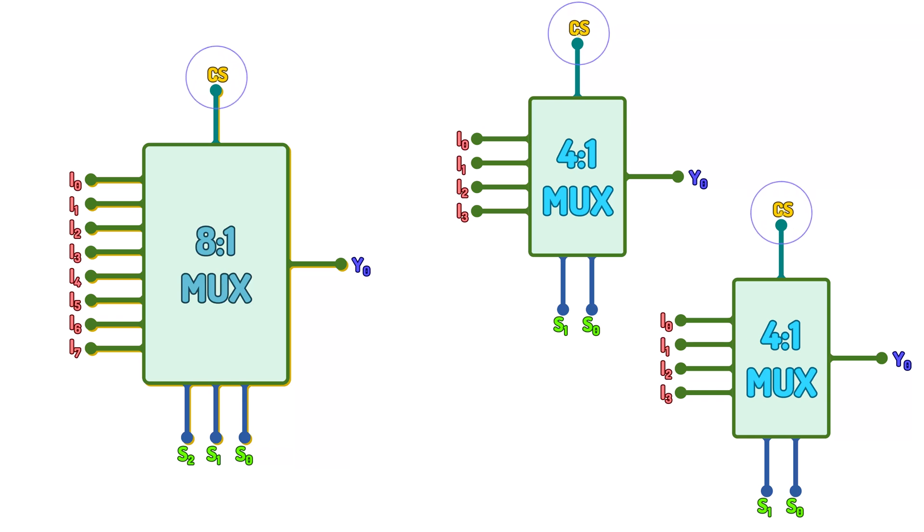This is an active low pin. Active low means the corresponding multiplexer is selected when its CS pin is made low or zero.